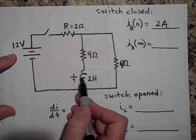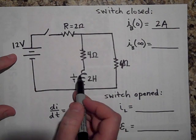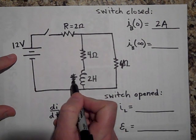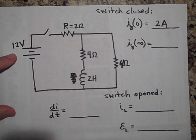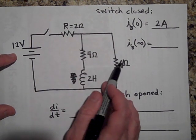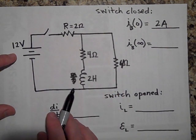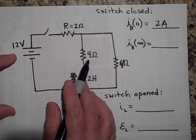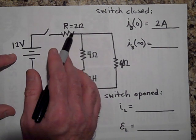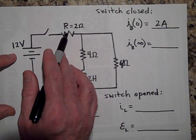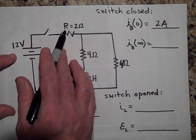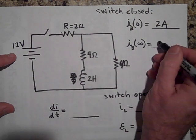A long time later, the current is hardly changing, so the inductor is not fighting anymore — it behaves just like a wire. Now you have two 4-ohm resistors in parallel, which equals 2 ohms, and that's in series with another 2-ohm resistor. The total resistance is 4 ohms, so the battery current at infinity is three amps.